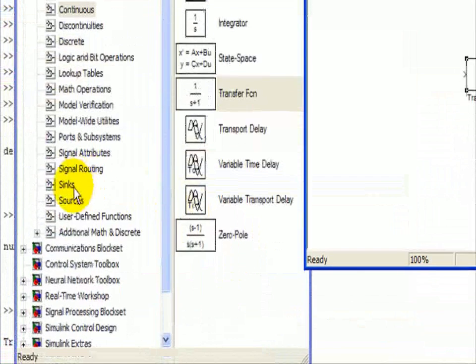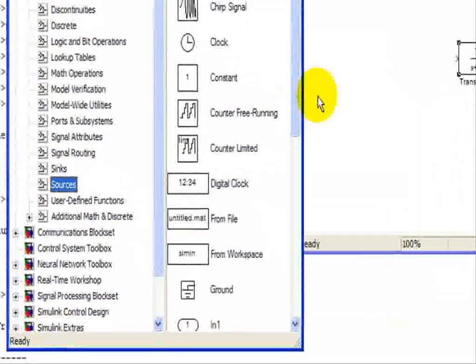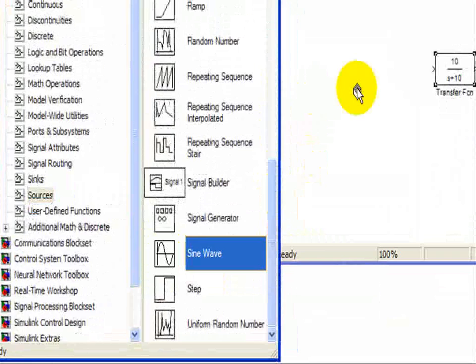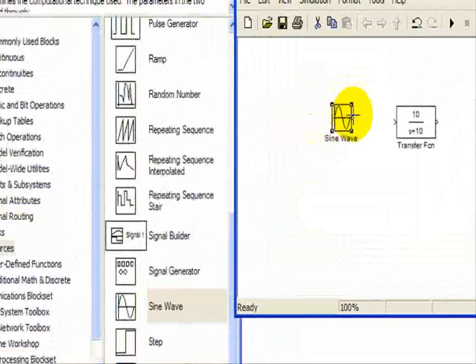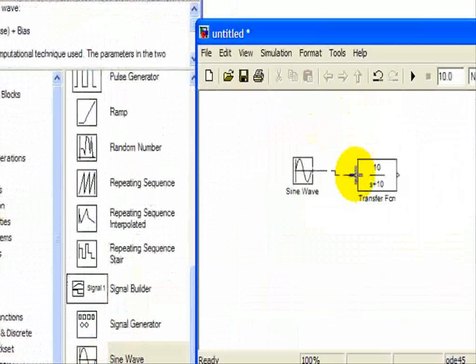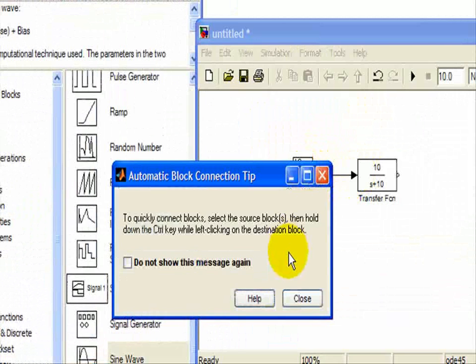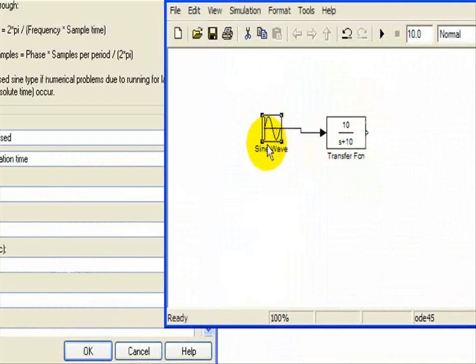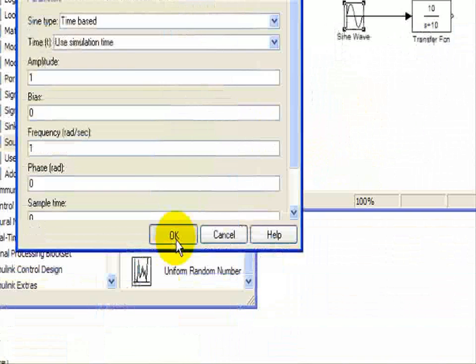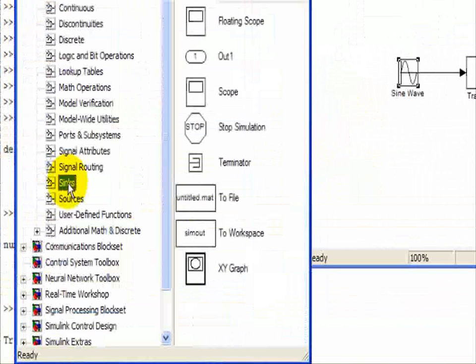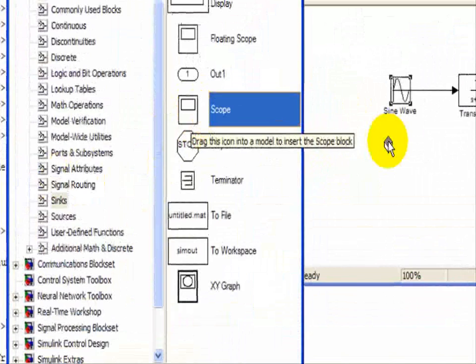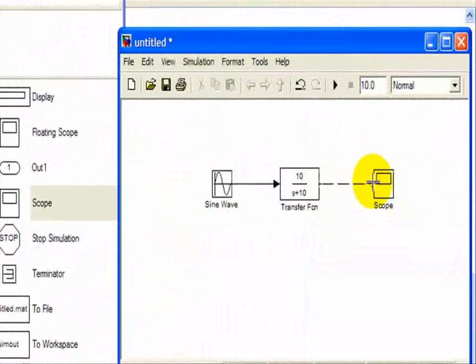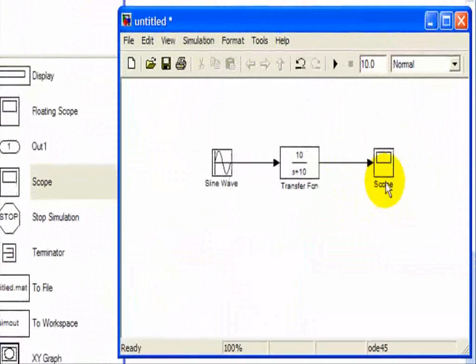We're going to go to our source, pick a sinusoid sine wave input, and then we'll go to a sink and get an oscilloscope. Then connect it from here to there. Here's our scope.